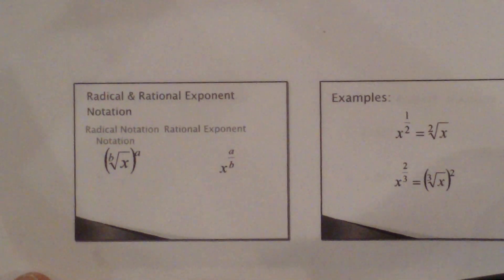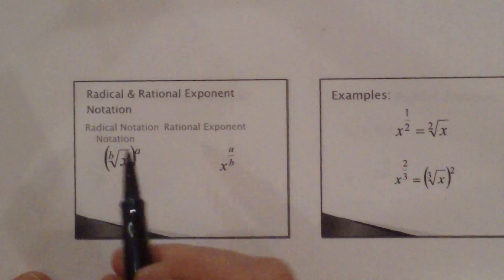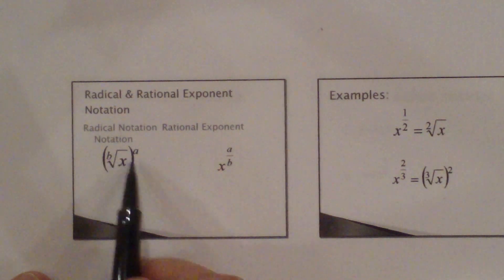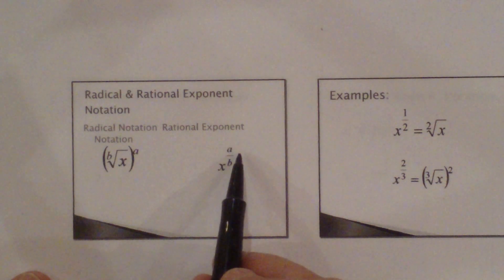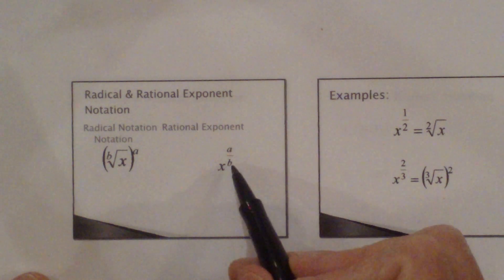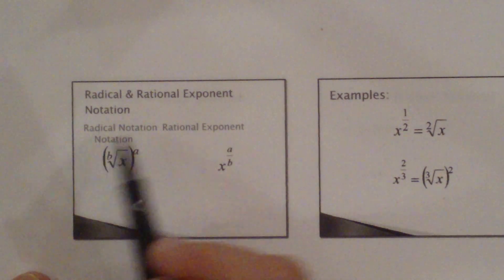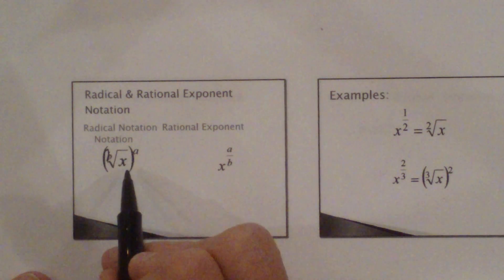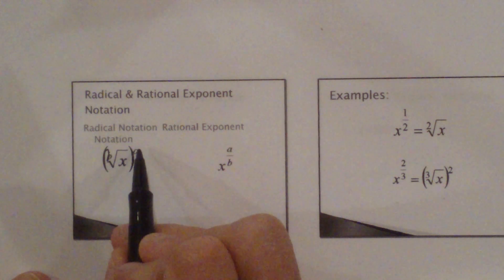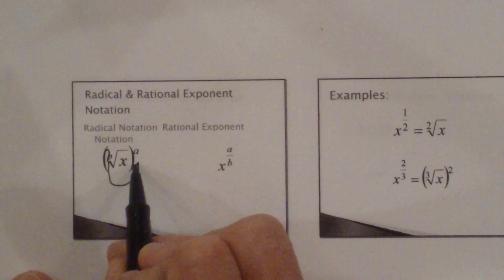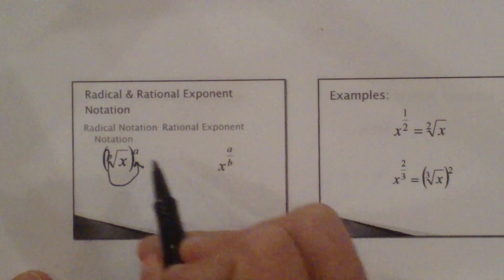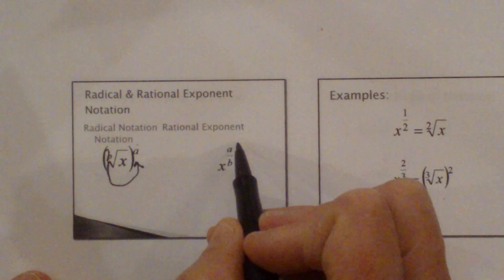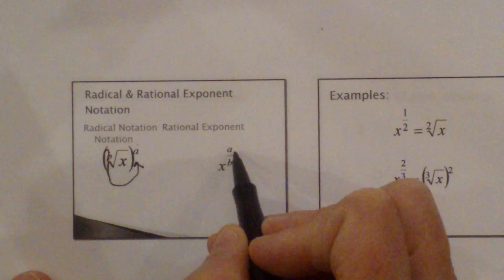Okay, now let's look at the actual lesson. Today we're going to talk about how to rewrite terms from a radical form to a rational — rational just is another fancy word for fraction — so fractional exponent or rational exponent. So if you have the b-th root of x all raised to the a power, you basically just take this b, move it around to the bottom of the a, and it becomes a rational exponent of x to the a over b.